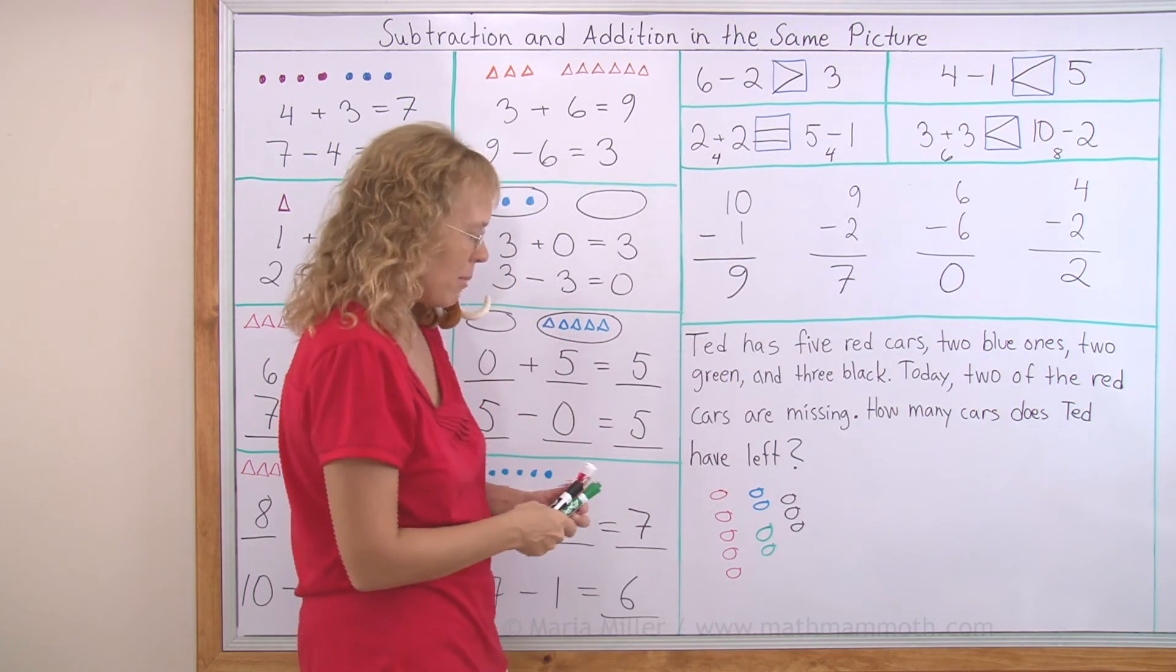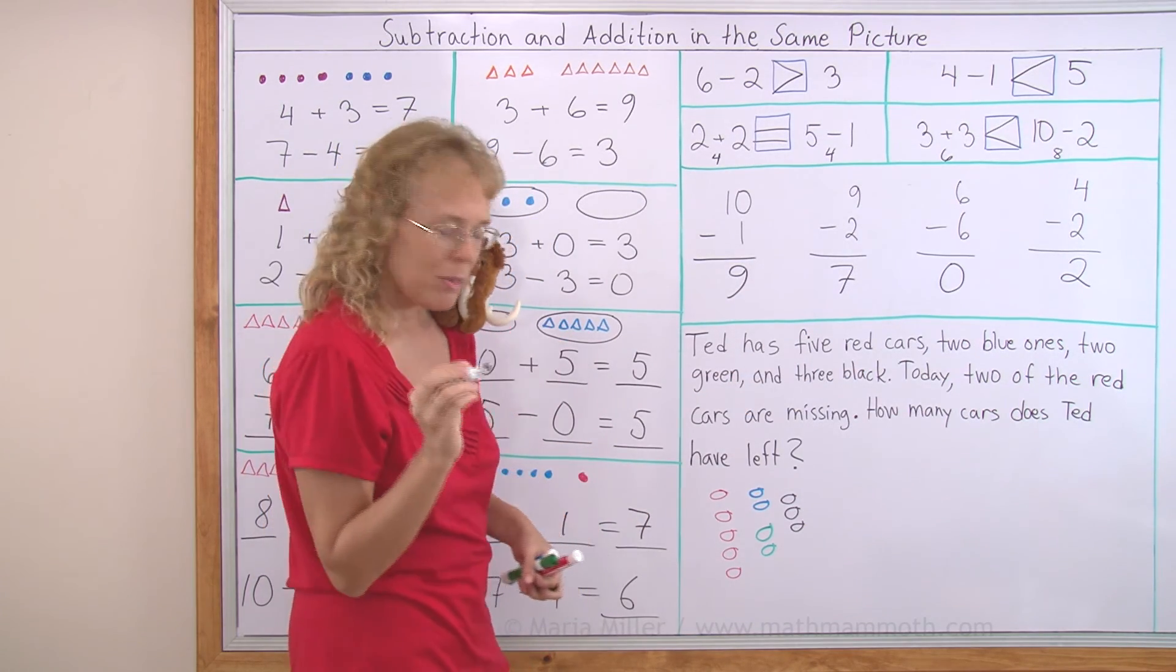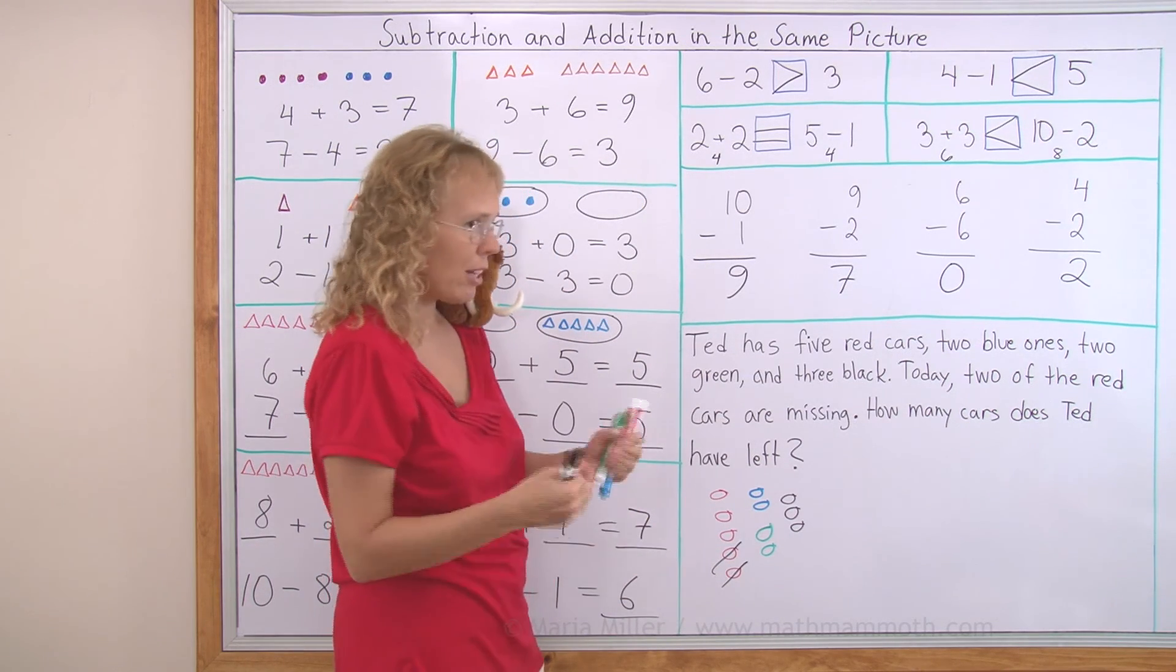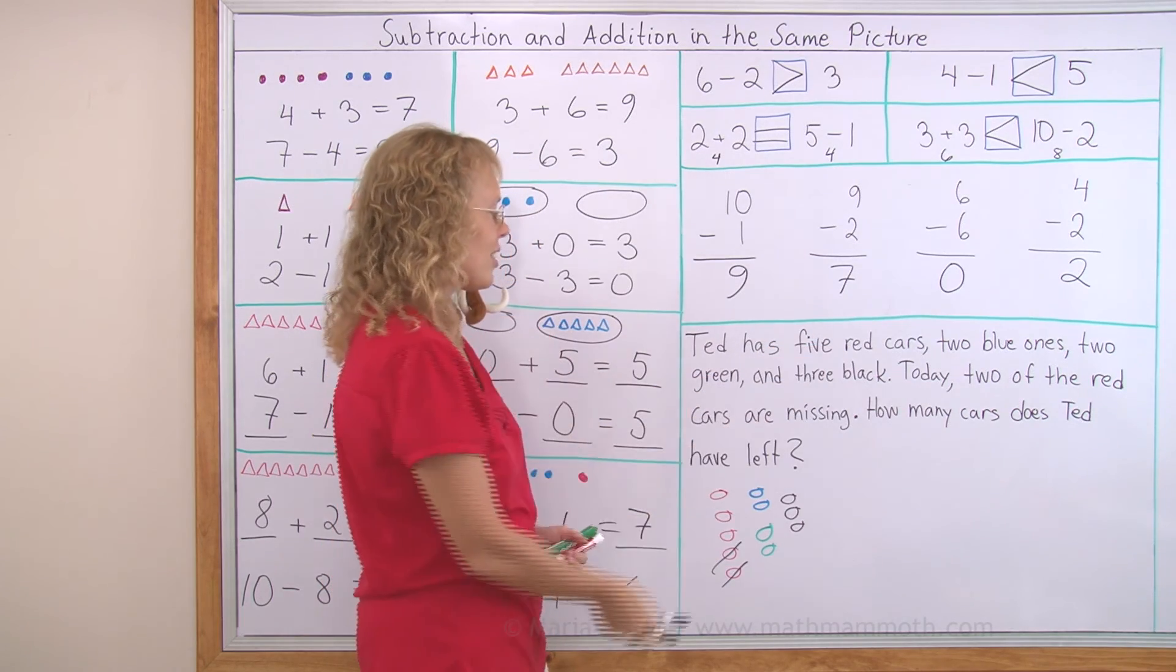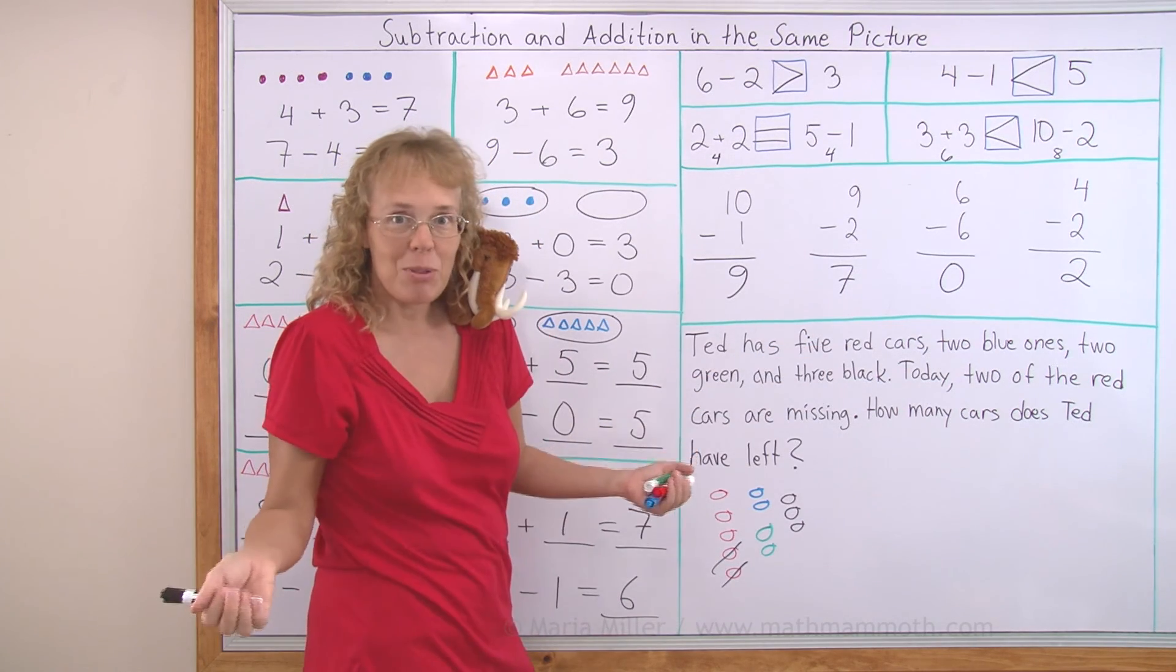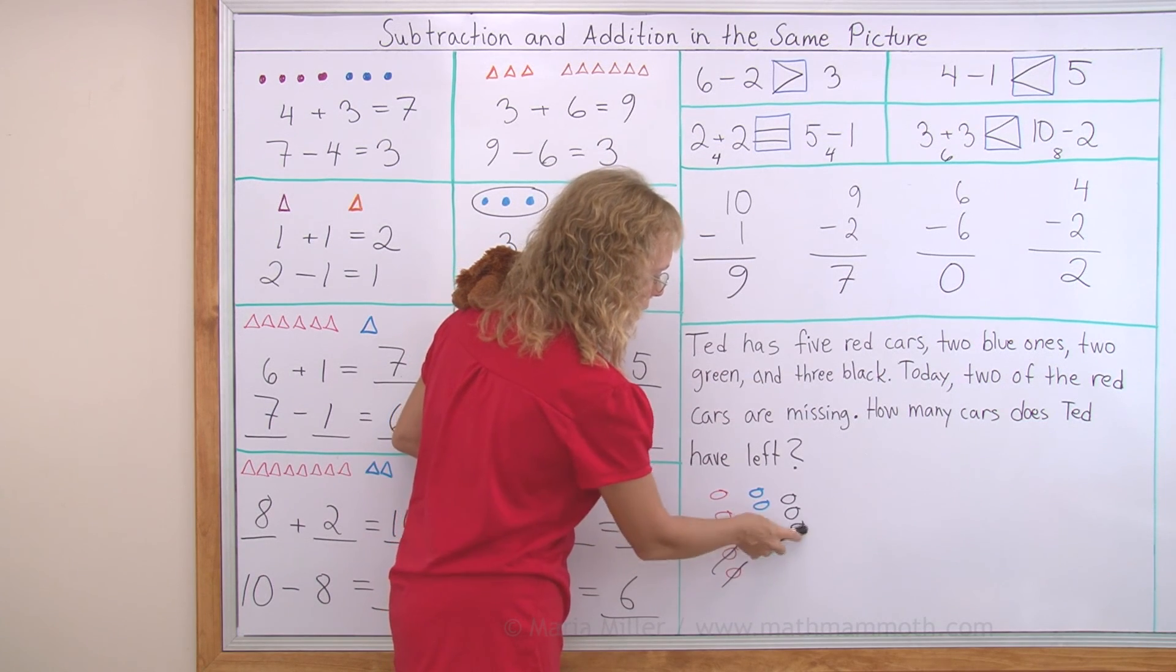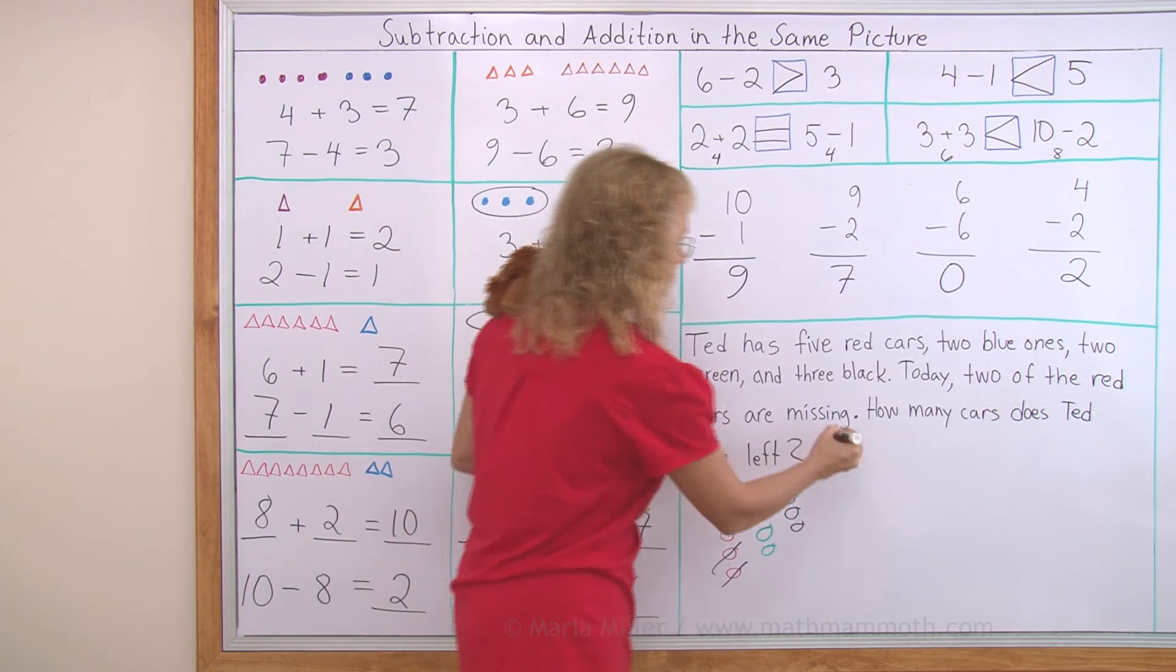Today, two of the red cars are missing. So I'm going to put in my picture that two red cars are missing. They went somewhere else. Or they were left somewhere. How many cars does Ted have left? That's an easy problem. Just count here. One, two, three, four, five, six, seven, eight, nine, ten. Ten cars left.